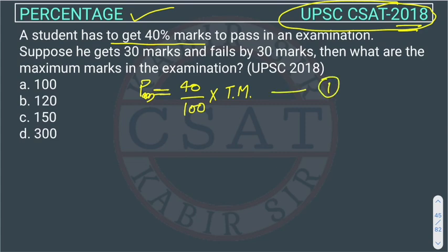Suppose he gets 30 marks — now that student got 30 marks, right? And he fails by 30 marks. So he is getting 30 marks less than the passing marks.